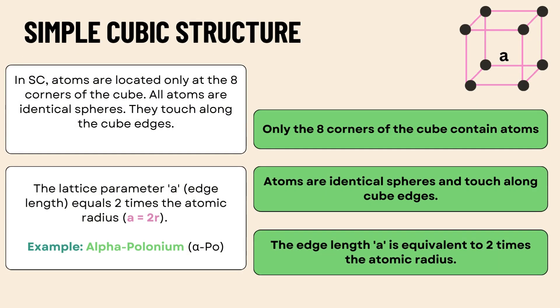Here, the focus shifts to the simple cubic (SC) crystal structure. In this structure, atoms are located only at the eight corners of the cube. There are no atoms on the faces or in the center. The edge of the cube is represented by A, the lattice constant or edge length. This structure is the simplest type of crystal lattice and forms the foundation for understanding more complex structures.